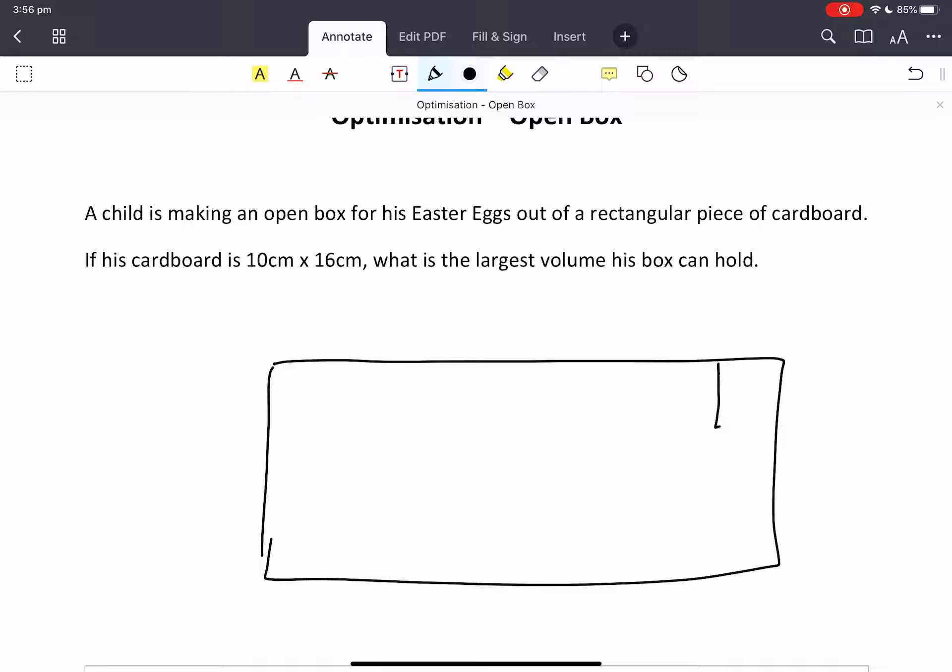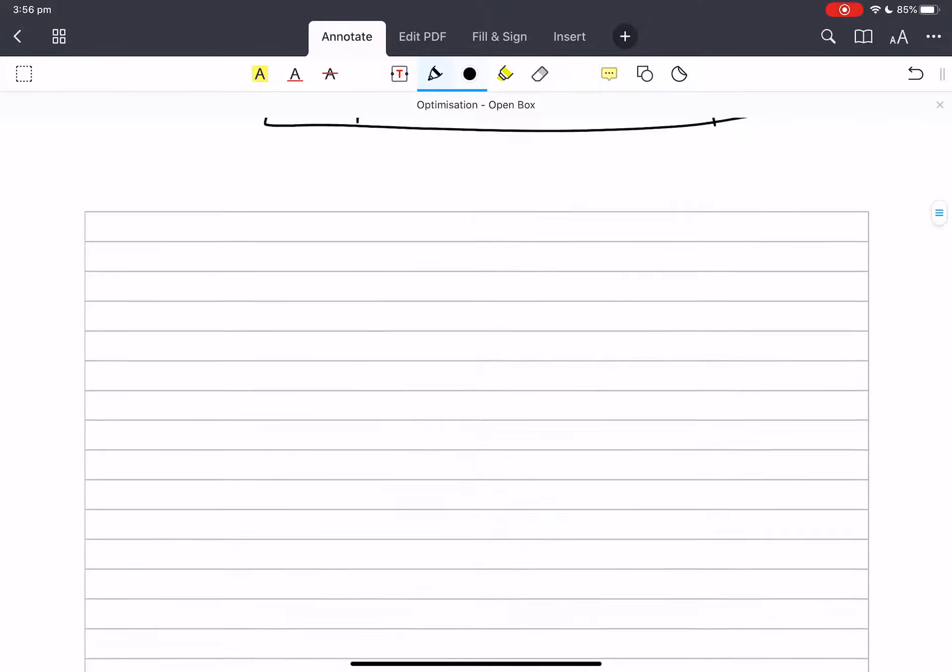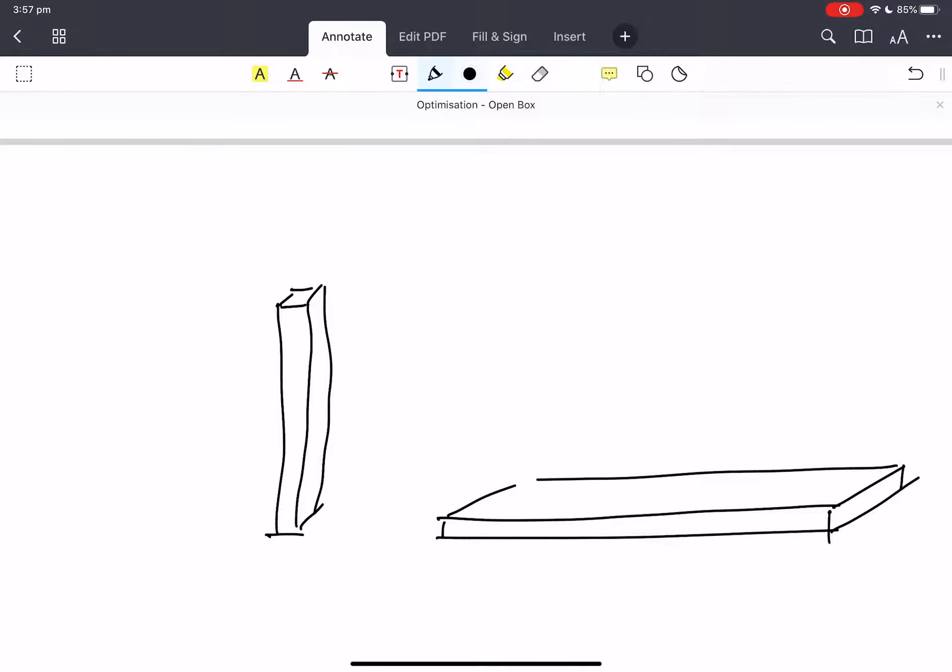So what you're thinking of is we've got a piece of cardboard and I'm cutting the little corners out, and then that will be my base. There's a length and a width, and I don't know how much to cut out. So that's my unknown. Clearly I can have a box that is tall and skinny or a box that is short and fat.